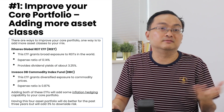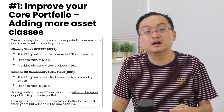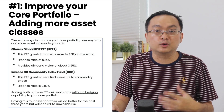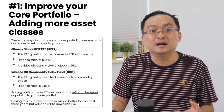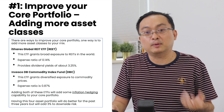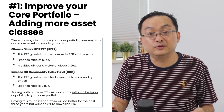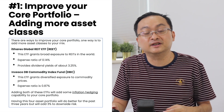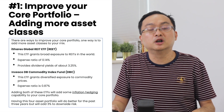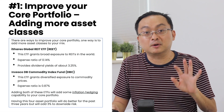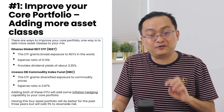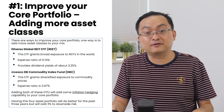I've got data on this REIT ETF on the slide. The expense ratio is 0.14%, and the dividend yield is about 3.25%. REITs give a decent dividend, and this gives you a broad exposure to real estate from around the world. So that's a very good addition.